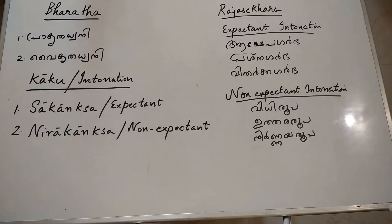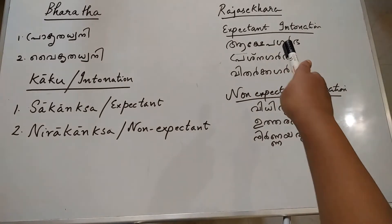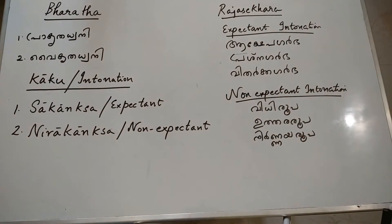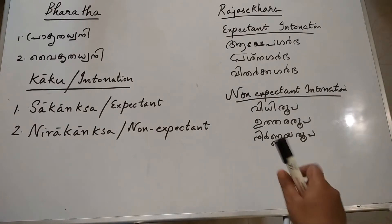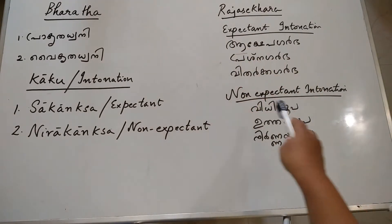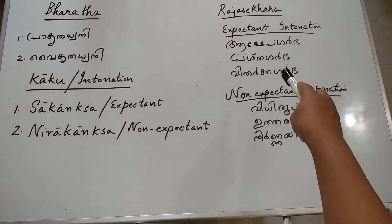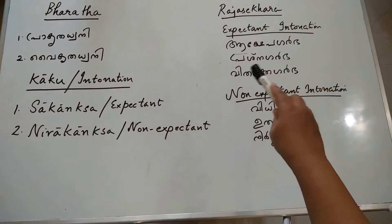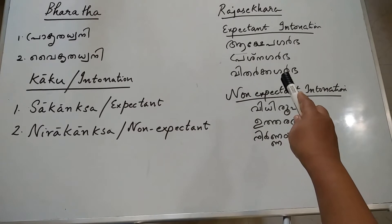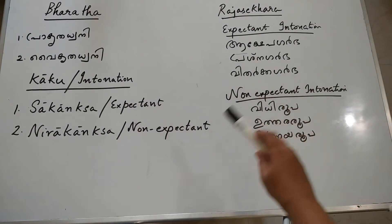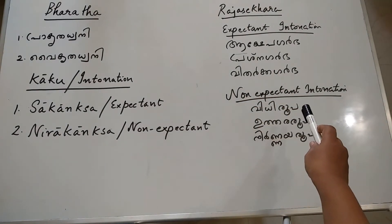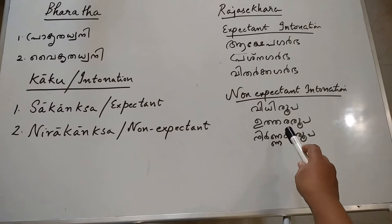Now let us see what Rajashekhar has said. He is yet another scholar who tried to classify expectant and non-expectant intonation further. He divided expectant intonation into three: Aakshhevagarbha, Prashnagarbha and Vidarkagarbha. And he classified non-expectant intonation into three: Vidirubha, Uttararubha and Nirnayarubha.